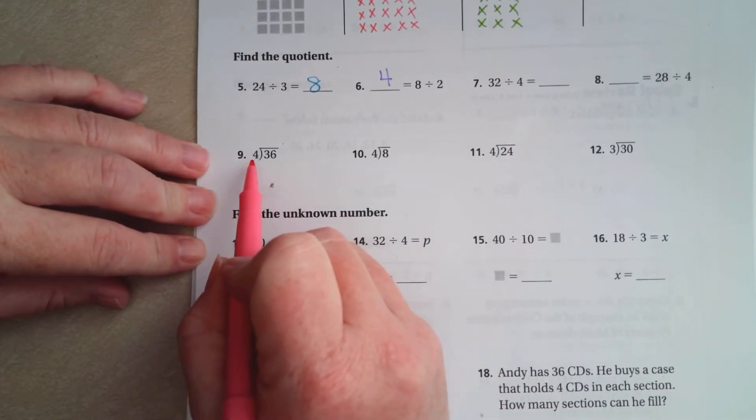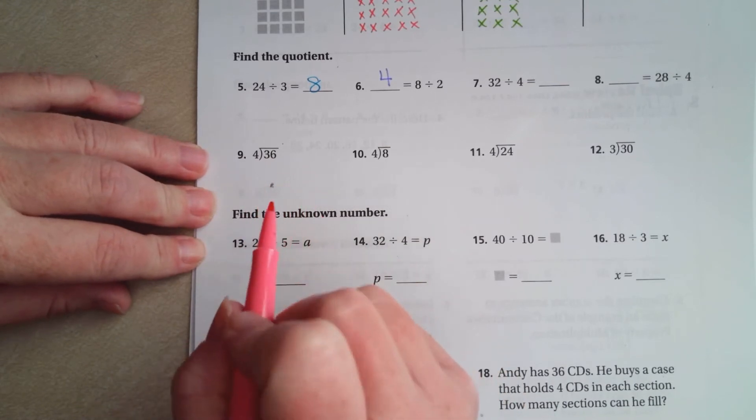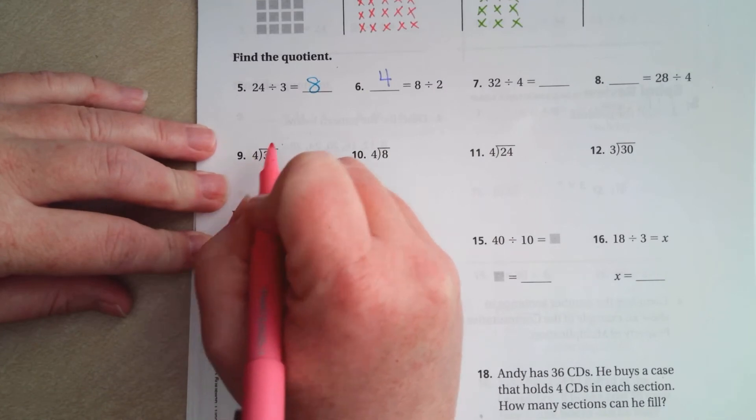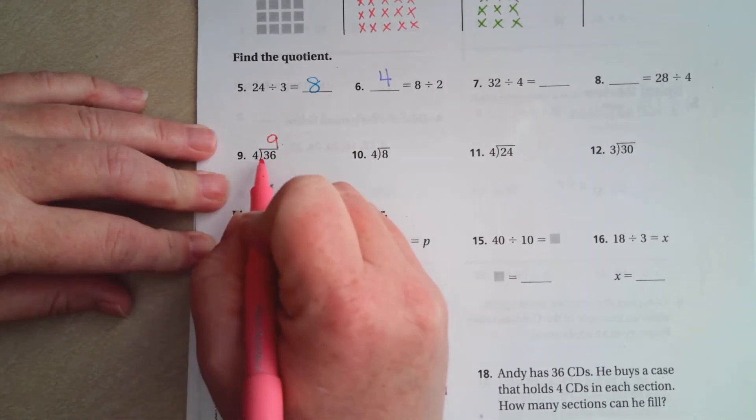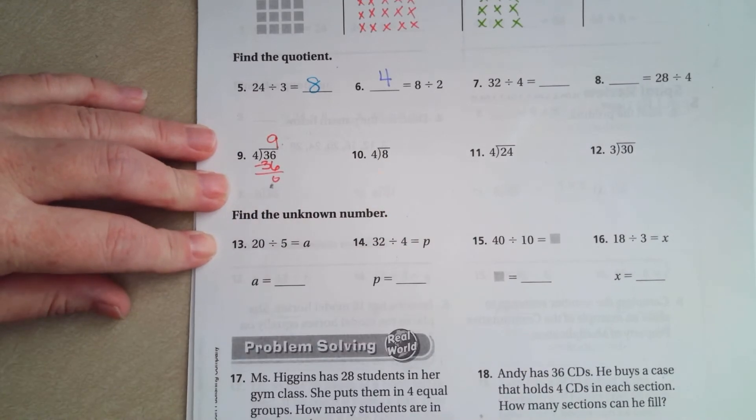Number 9. 4 times what goes into 36? So 4 times 9 is 36. We have 0 left over.